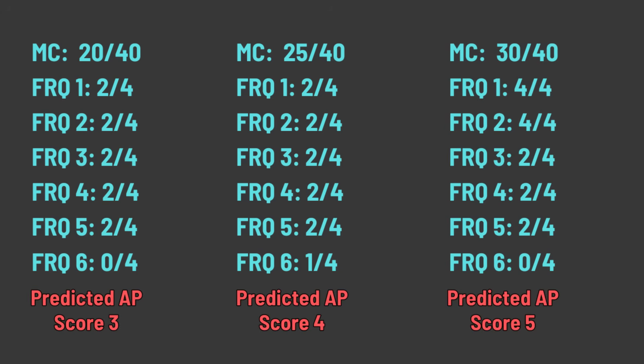In the last scenario, you get 30 out of 40 multiple choice questions correct. You get two FRQs fully correct — FRQ one and FRQ two, because they're usually the easiest. And then on FRQ three, four, and five, you only get half credit. And FRQ six, you don't even attempt and get zero points. That's going to get you a predicted AP score of a five.